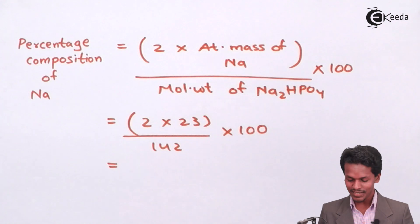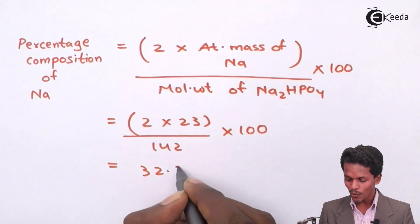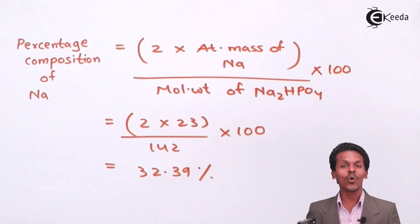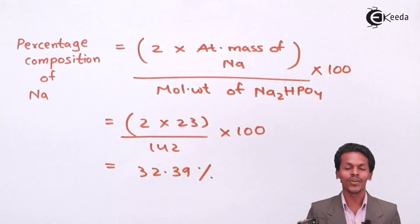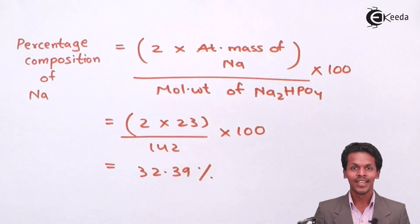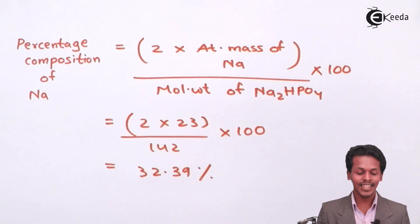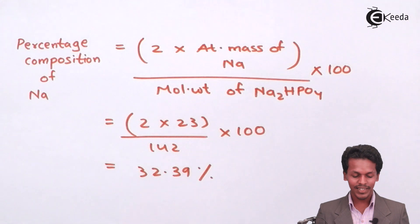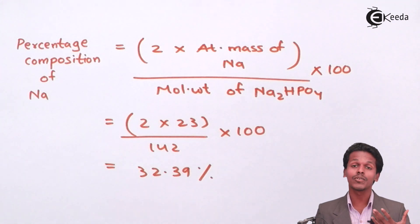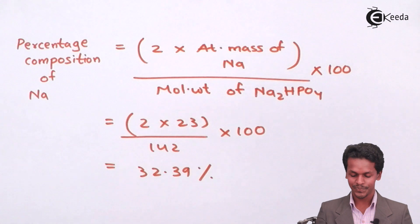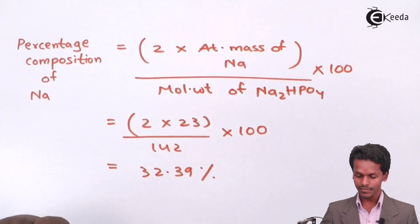The answer we get is 32.39%. This means 32.39% of sodium is present in the overall compound. Now we move to calculating the percentage composition of the next element, hydrogen.